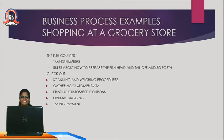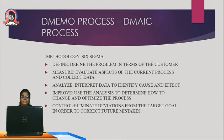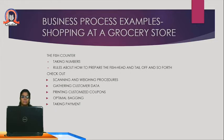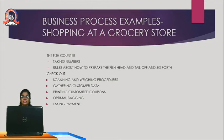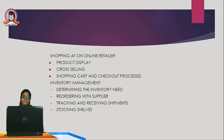Looking at business process examples: at a grocery store checkout, the processes include scanning and waiting procedure, gathering customer data, printing customized coupons, optimal bagging, and taking payment. For shopping at an online retailer, the processes include product display, cross-selling, shopping cart and checkout process. Inventory management involves determining inventory needs, reordering with suppliers, tracking and receiving shipments, and stocking sales.